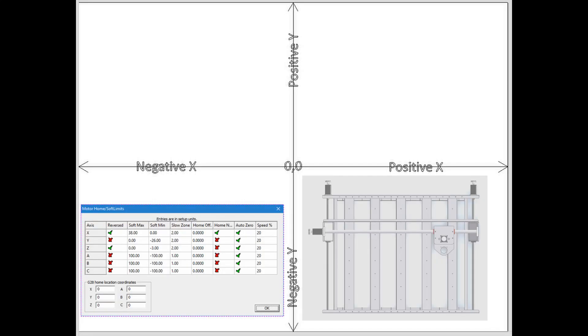And finally, here is an example of the machine homing to the back left corner of the machine. Again you can see that a check mark is in the home negative column for the x-axis because it needs to move in the negative direction to find home. And the y-axis has an x mark because it needs to move in the positive direction to find home.